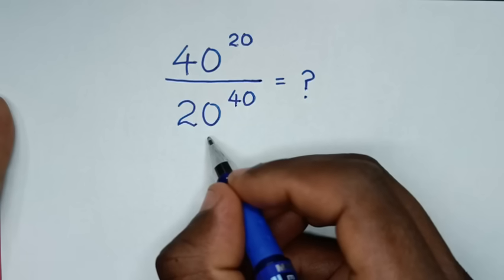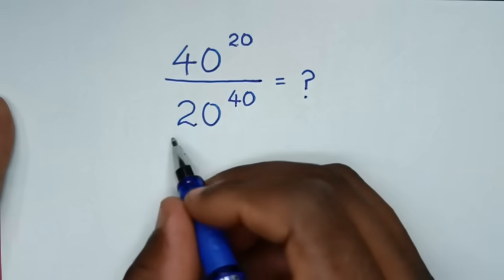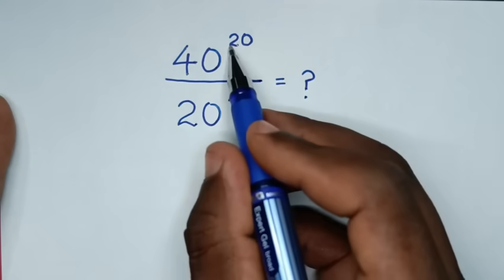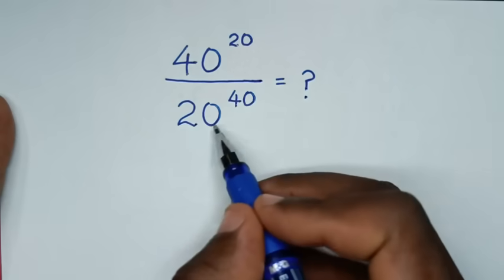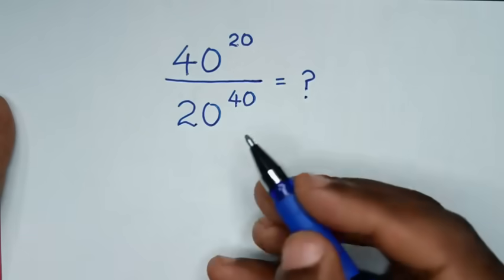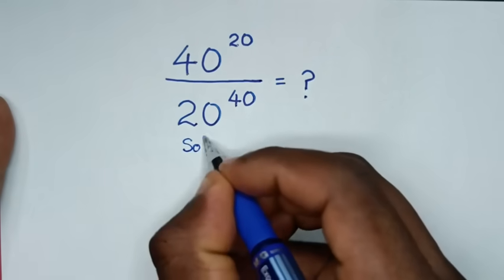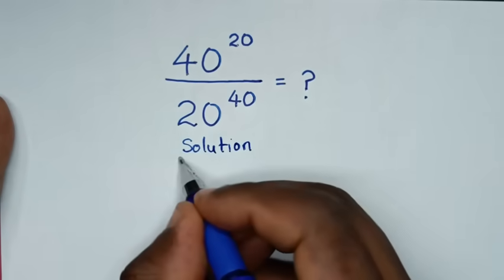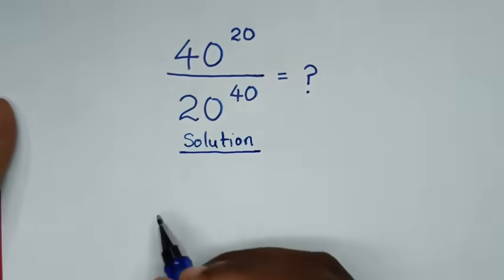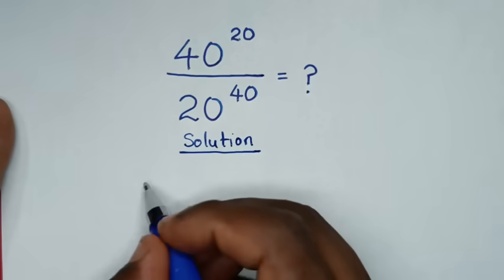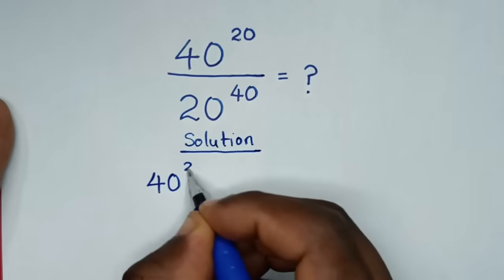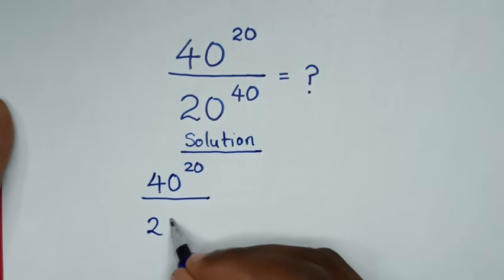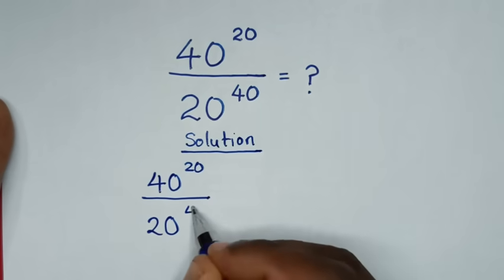Hello, you are welcome to solve this math problem, which is 40 power of 20 over 20 power of 40. Now, solution. From our problem, which is 40 power of 20 over 20 power of 40.